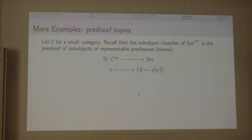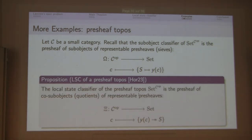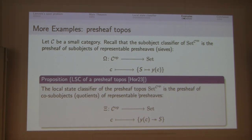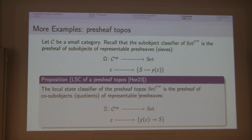Let me give more interesting examples. For a small category C, recall that the sub-object classifier of the presheaf topos is the presheaf of sub-objects of representable presheaves — the sieves. As I said, the local state classifier is kind of dual to the sub-object classifier. We have this explicit description: the local state classifier of the presheaf topos is the presheaf of cosieves — or, in conference terminology, quotients of representable presheaves. This is a kind of dual notion, and I think it is a surprising result.